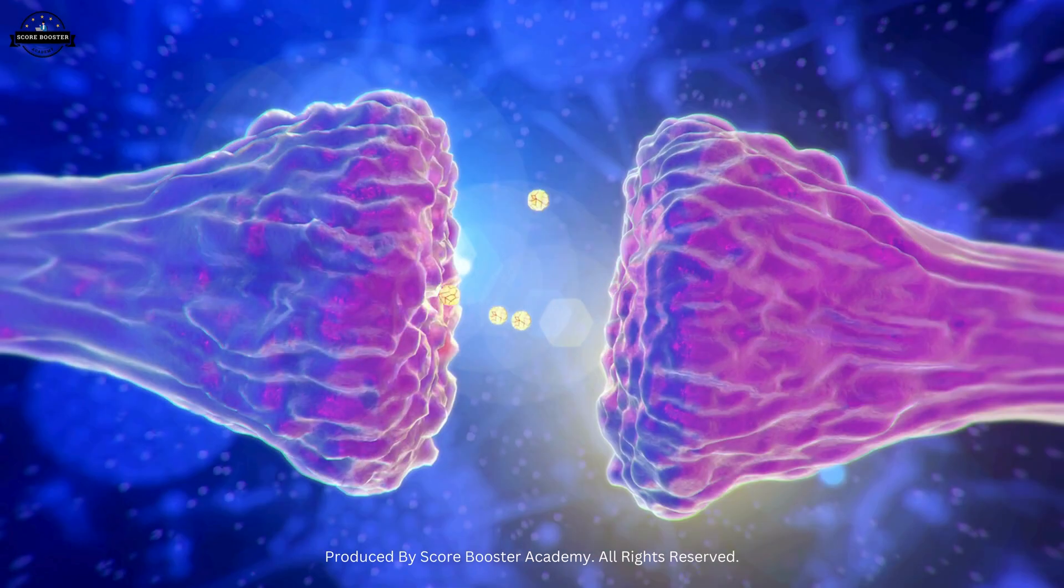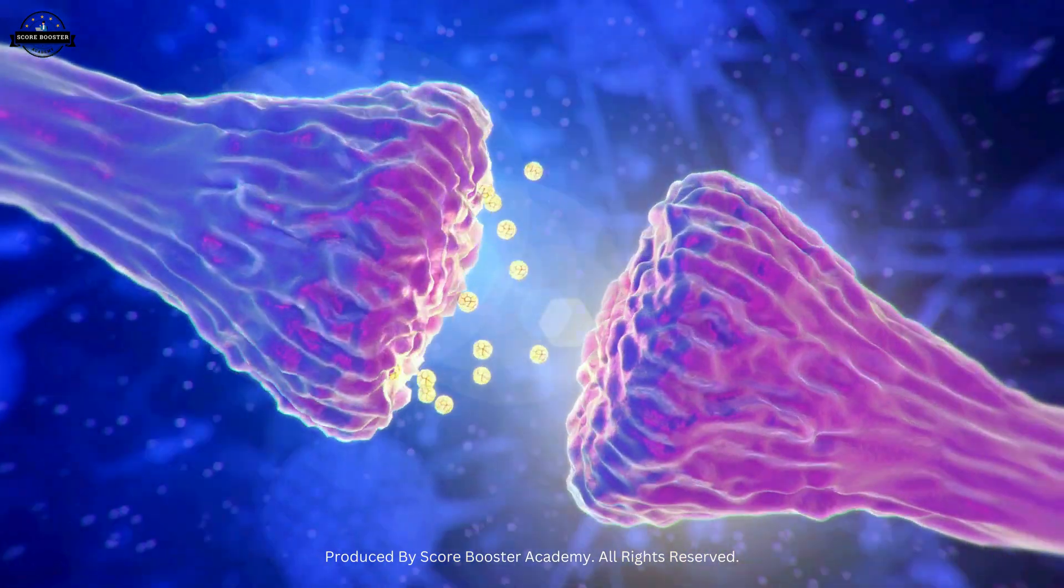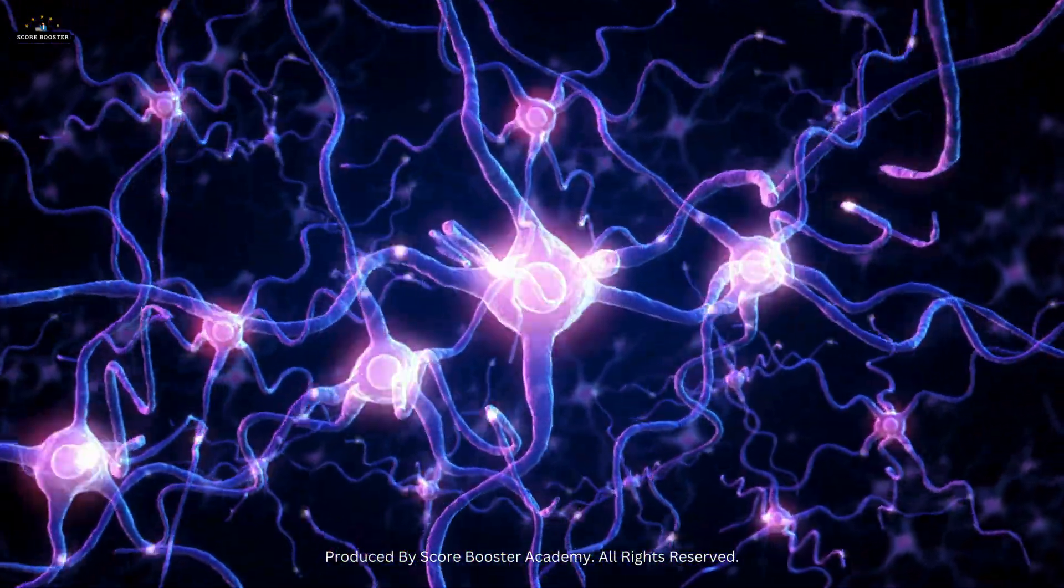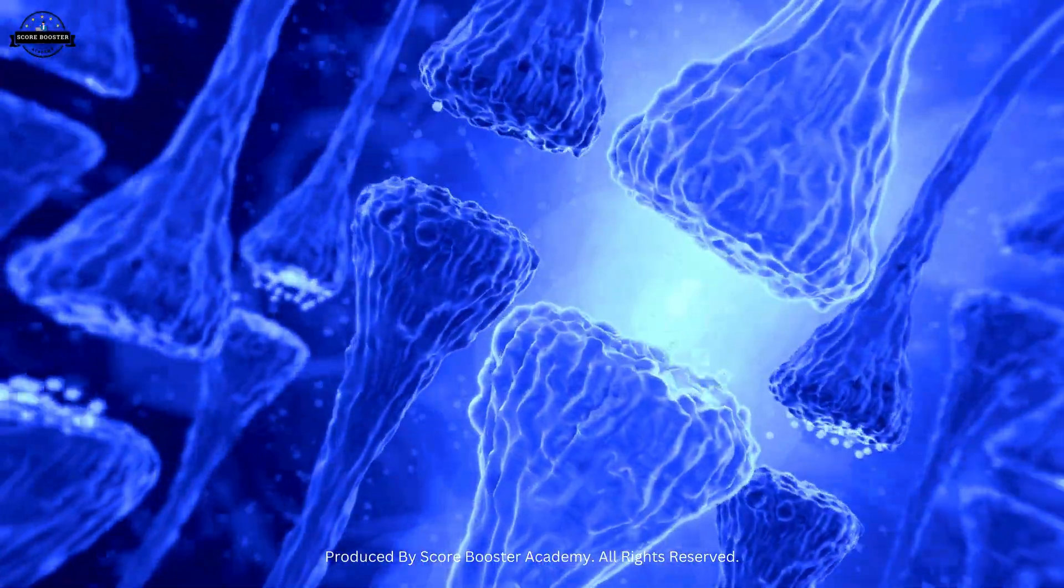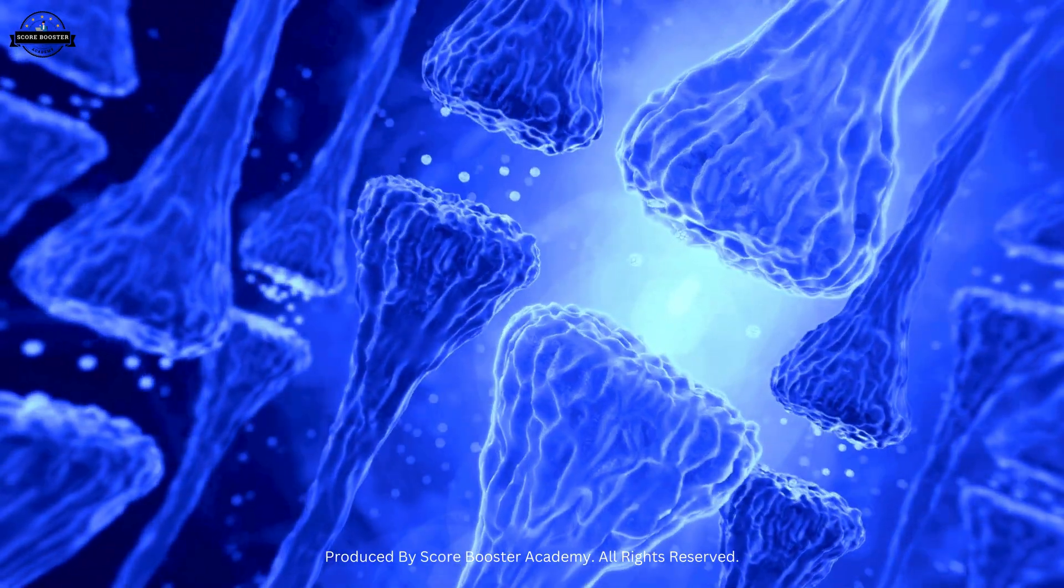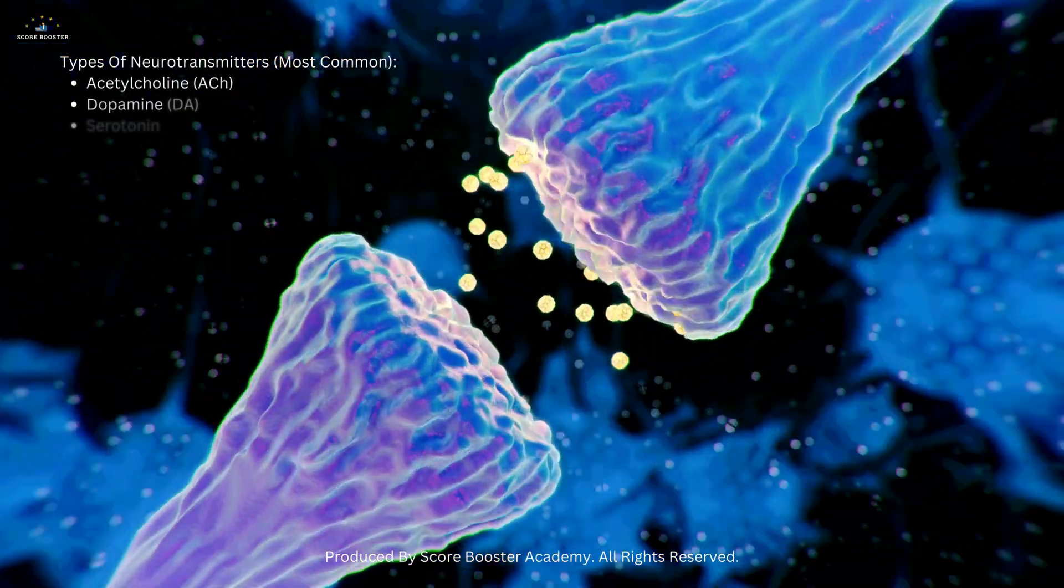These mechanisms ensure that synaptic transmission remains a finely-tuned process, preventing overstimulation and maintaining the balance of neural communication. Synapses come in various types, each specialized for different functions. The most common type is the chemical synapse, which uses neurotransmitters to relay messages.